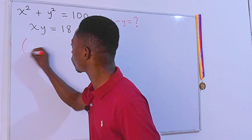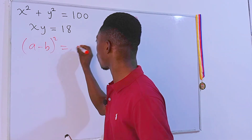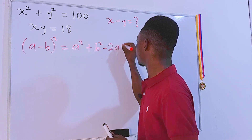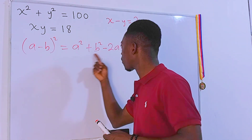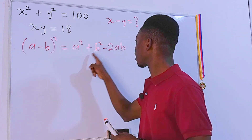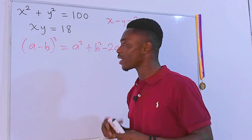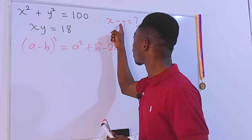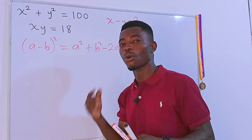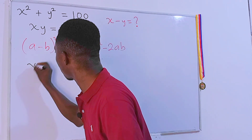Let's check out a better approach. We know from an algebraic identity that (a minus b) squared, when expanded, gives us a squared plus b squared minus 2ab. If we relate this to what we have here — a squared is x squared, b squared is y squared — we can use this identity to find x minus y more quickly.